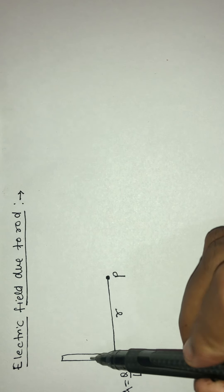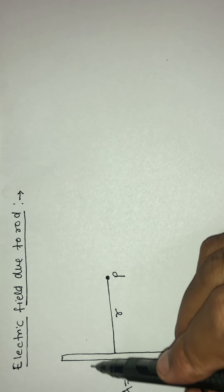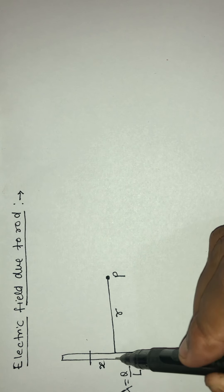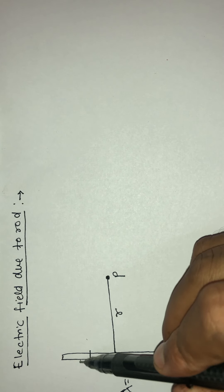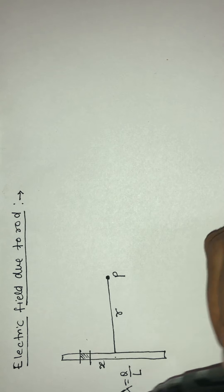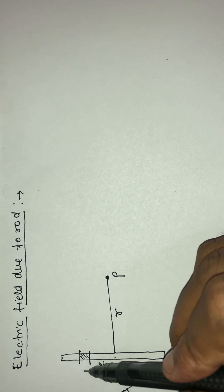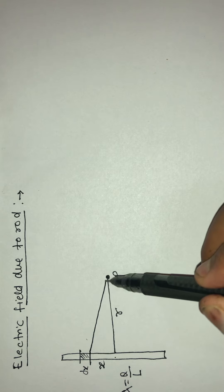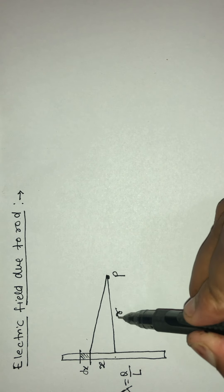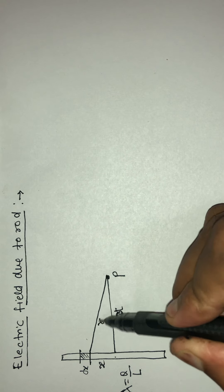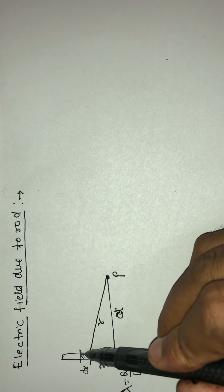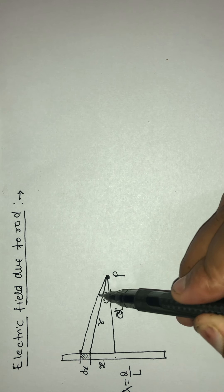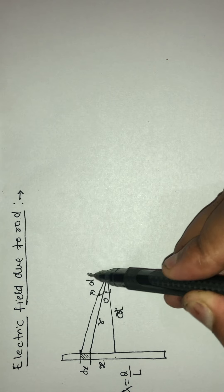So I select one element at distance x from this point, and the thickness of this element is dx. This distance I am taking as d, and this one will be R. If this angle is theta, this angle will be very small — let's say this one is d-theta.